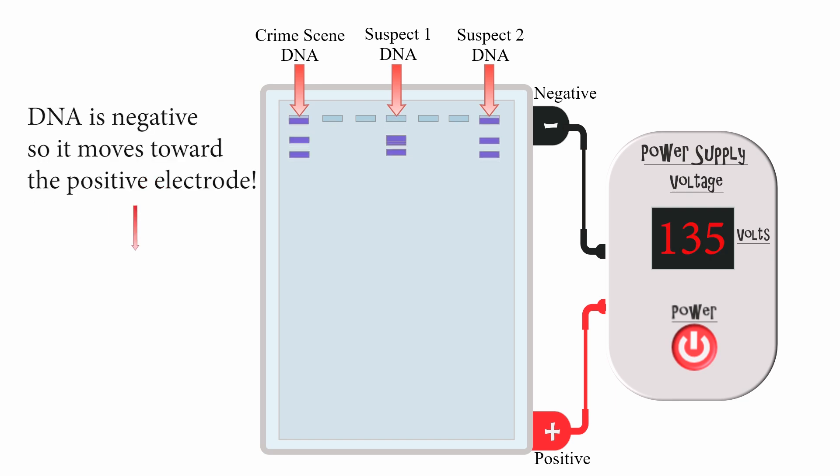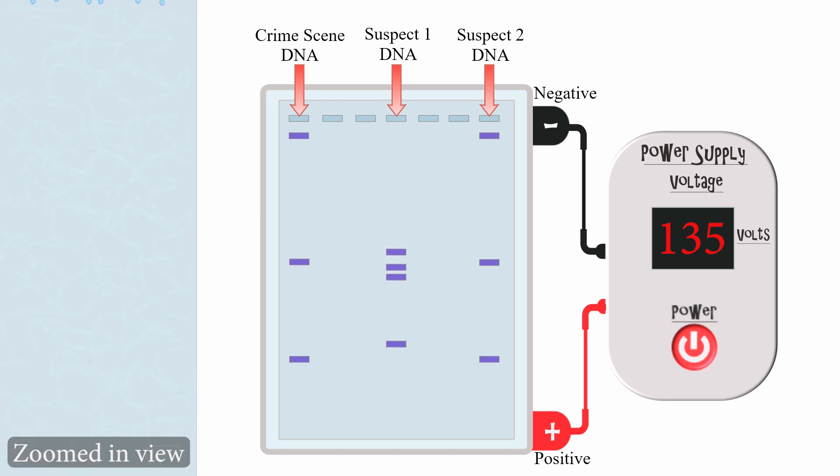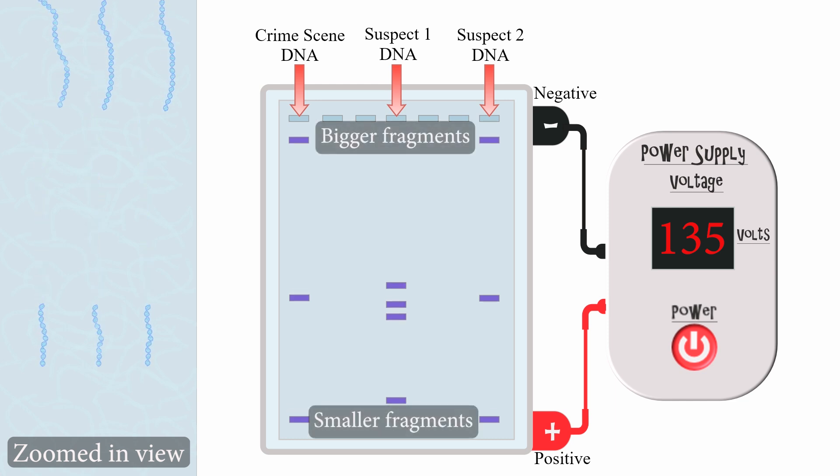DNA moves toward the positive end when the chamber is turned on, because DNA is negatively charged. Opposites attract. But the DNA fragments don't move at the same speed. Smaller fragments can move through faster because they can easily move through the pores in the gel. Bigger fragments, however, have a harder time moving through these small pores.